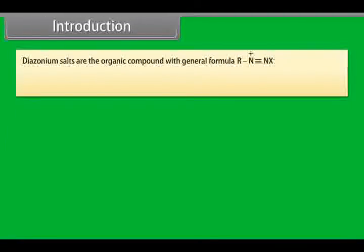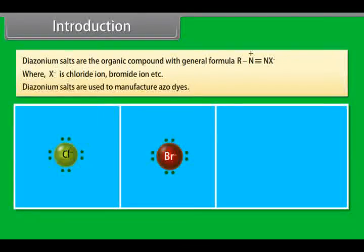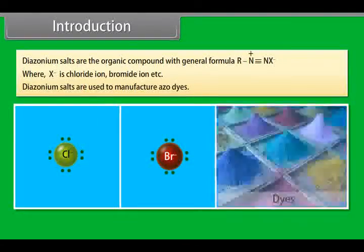Diazonium salts are the organic compounds with general formula R-N2+ X-, where X- is chloride ion, bromide ion, etc. Diazonium salts are used to manufacture dyes.